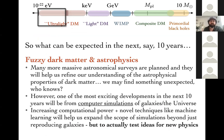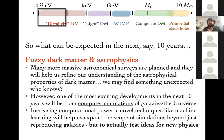Finally, on fuzzy dark matter and astrophysical probes more generally: increasingly wide and deep astronomical surveys will tell us more about the structure of galaxies and galaxy clusters, potentially distinguishing cold dark matter from fuzzy dark matter. One of the most exciting developments will be in computer simulations — rapidly increasing computational power plus novel machine learning techniques will expand simulations beyond just reproducing galaxies to actually using them as laboratories for testing new physics ideas.